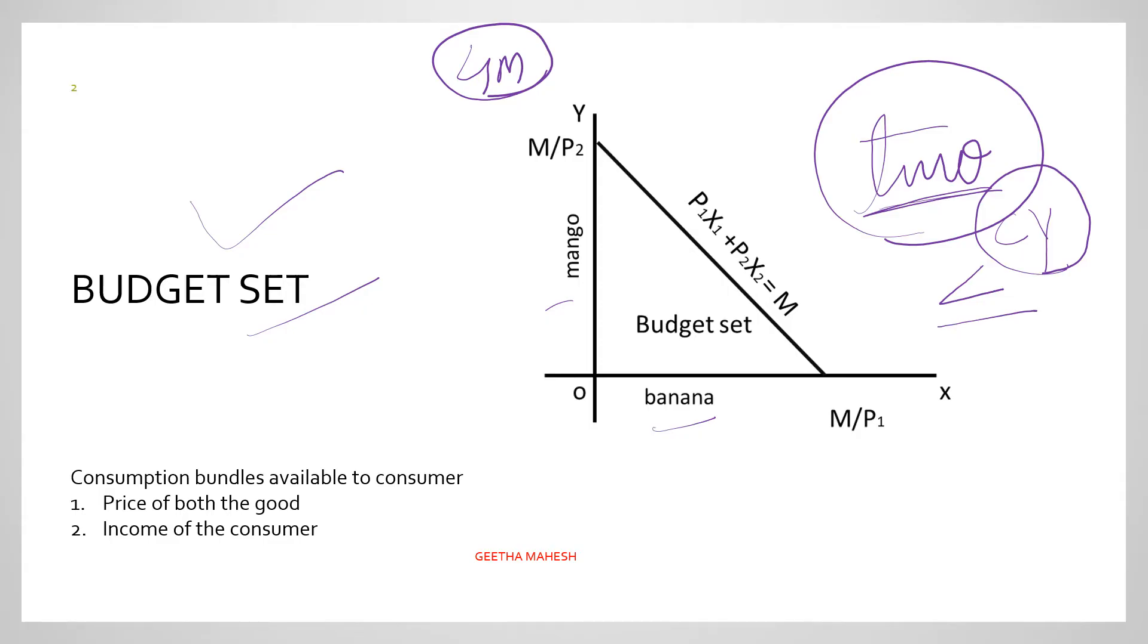Let's look at this diagram. On the x-axis we have banana and on the y-axis we have mangoes. Here we assume the prices of both goods are given and the consumer's income is also given. With this income and the prices, we can calculate which combinations are available. All these combinations together are called the budget set.